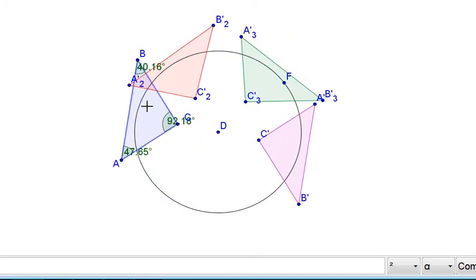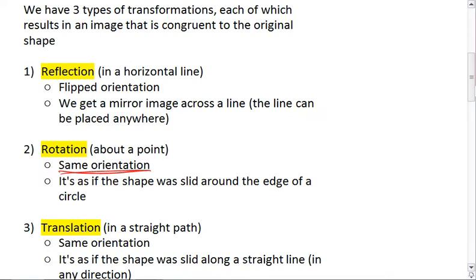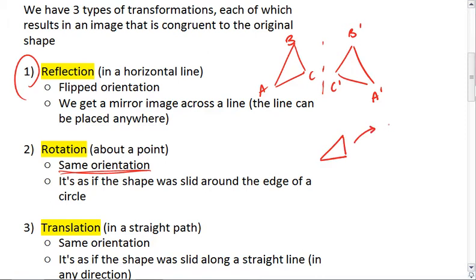Okay, so first of all we've done a reflection, which does give us a flipped orientation. And we've done a rotation about a point, which gives us the same orientation. And lastly, we're going to look at translation.